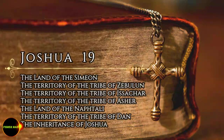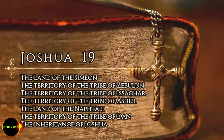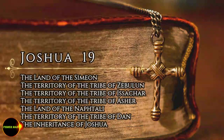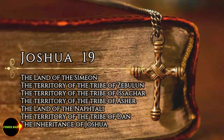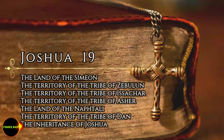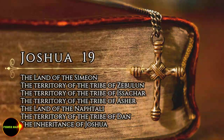The fifth lot came out for the tribe of Asher, clan by clan. Their territory included Helcath, Halai, Beton, Akshef, Alamelech, Amad, and Mishal. On the west the boundary touched Carmel and Shihor-Libnath. It then turned east toward Beth-Dagon, touched Zebulun and the valley of Ifta-El, and went north to Beth-Emich and Na'il, passing Cable on the left. It went to Abdon, Rehob, Haman, and Cana, as far as greater Sidon.